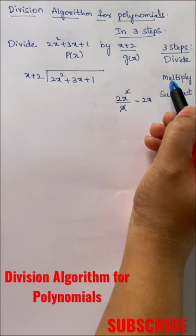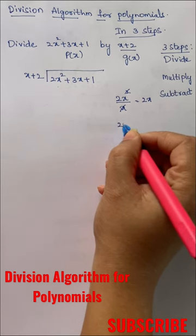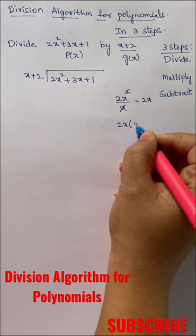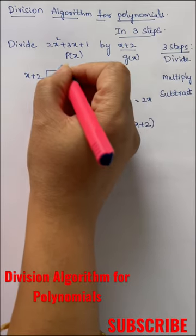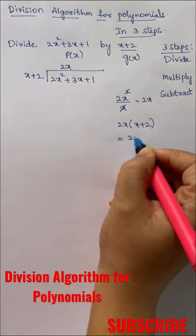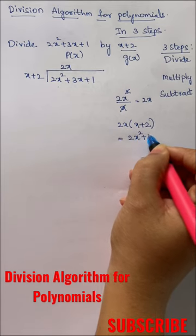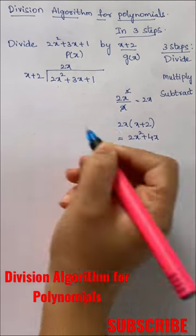And the next step is multiply. You will multiply 2x with g(x) that is x plus 2. This 2x is your first term of q(x). 2x squared plus 4x. You will write it here.